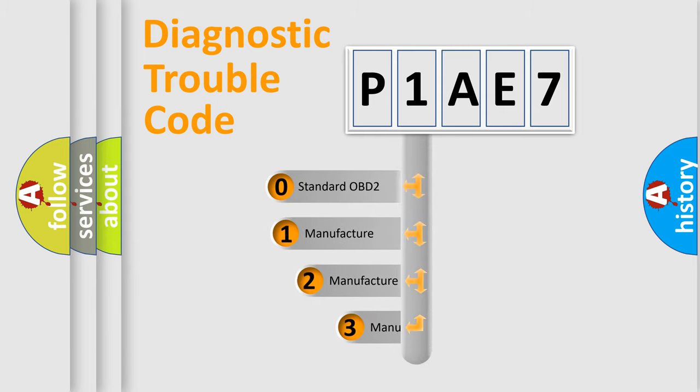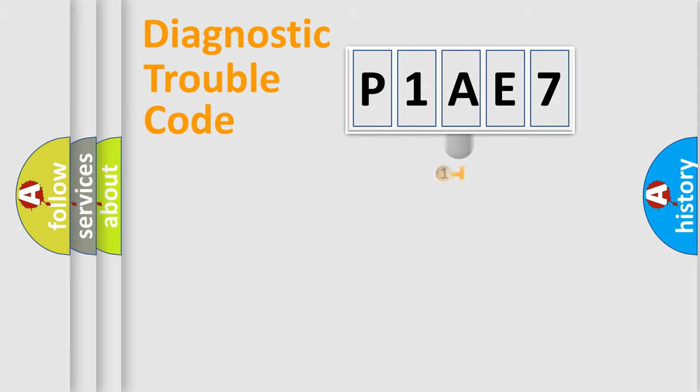If the second character is expressed as zero, it is a standardized error. In the case of numbers 1, 2, 3, it is a more prestigious expression of the car-specific error.